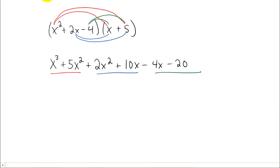Now just like before we have some like terms to combine. This time we have even more like terms, we have a couple of pairs of like terms. The x cubed is all by itself so that's going to stay. But we do have a 5x squared and a 2x squared, those are like terms. We add them together to get 7x squared. Now you'll notice you have a 10x minus a 4x, those are like terms. 10 minus 4 is 6, so we have 6x. And then the last term is going to be negative 20.